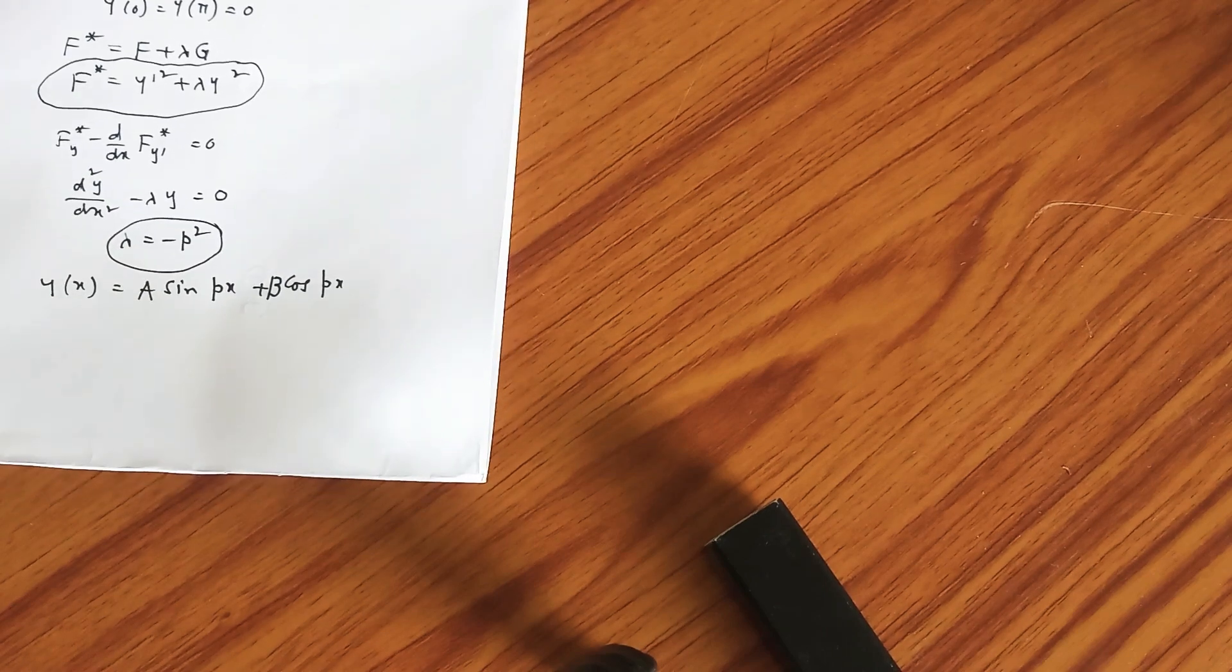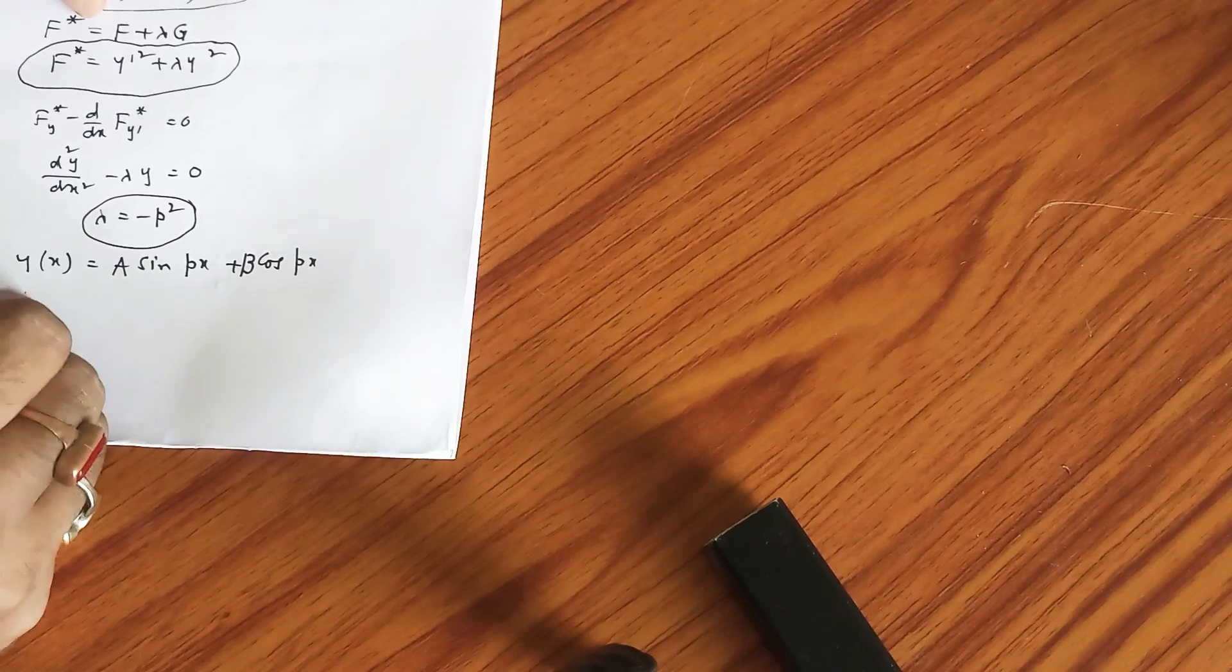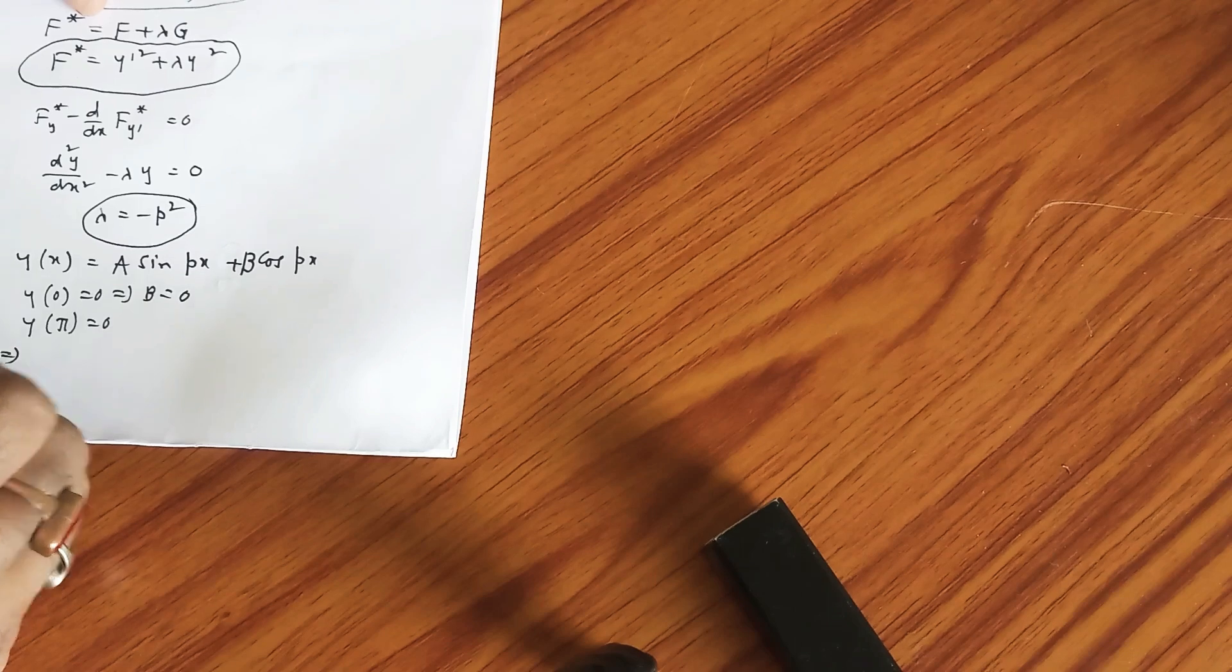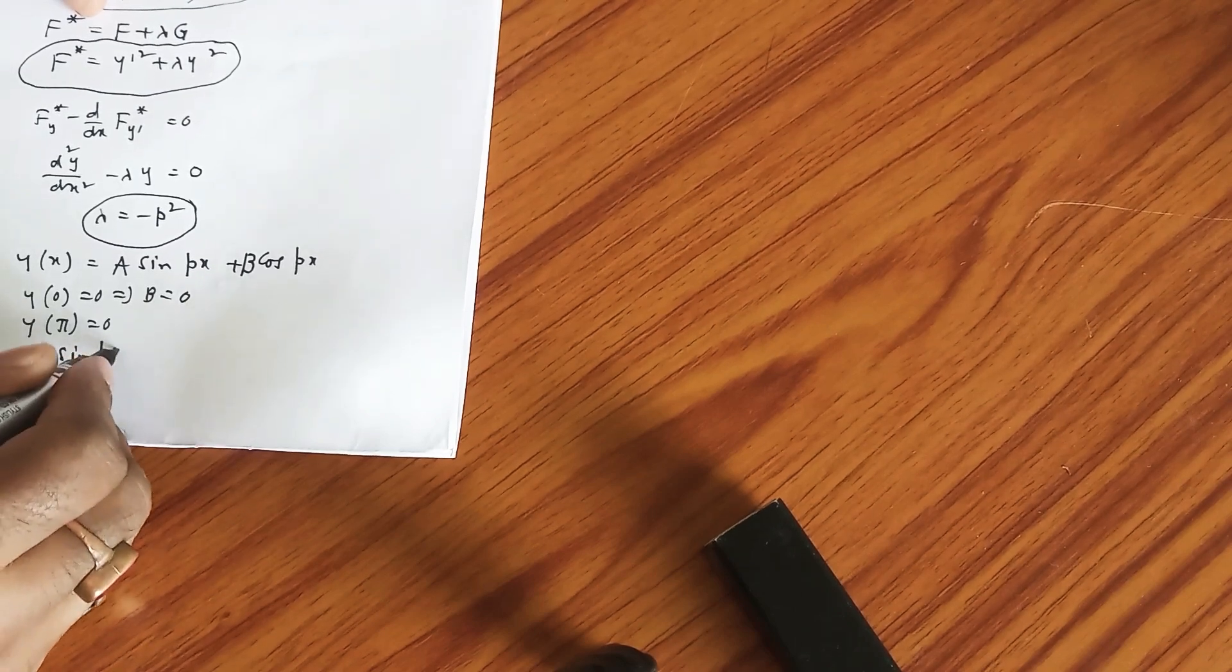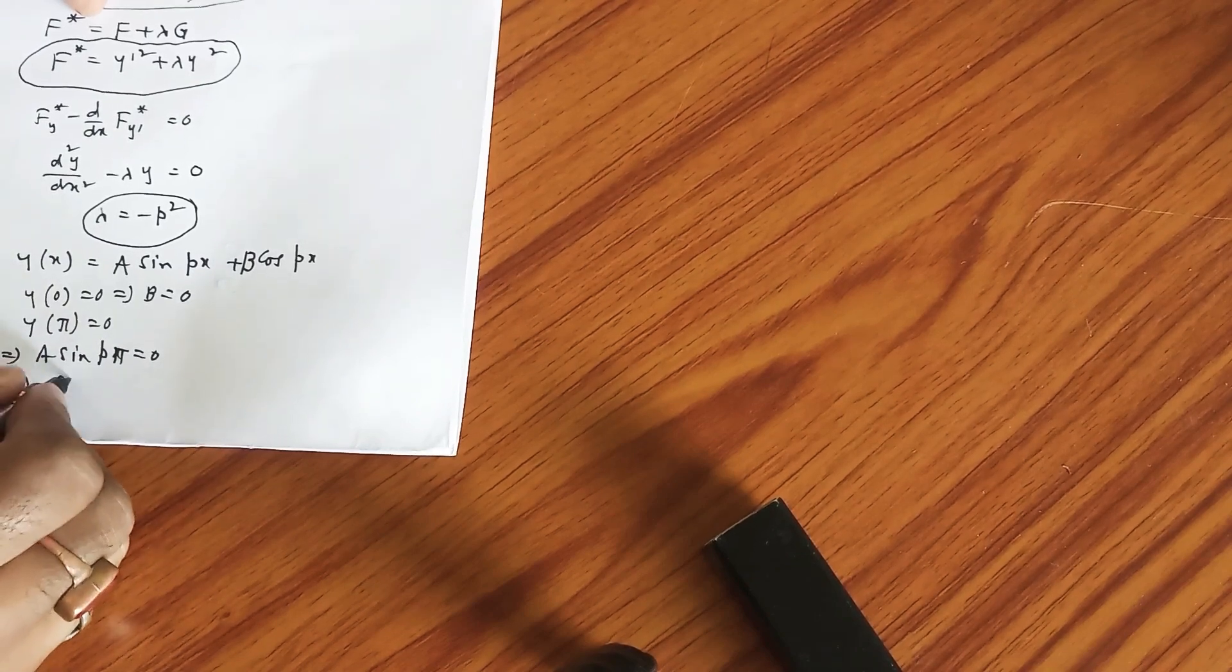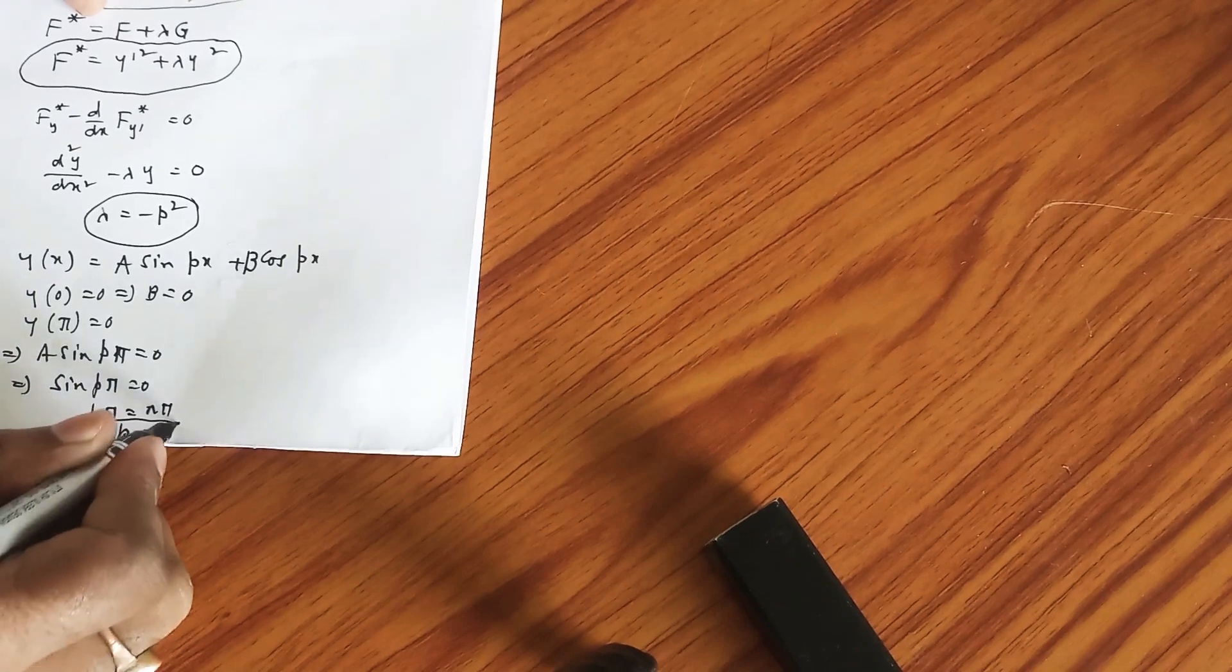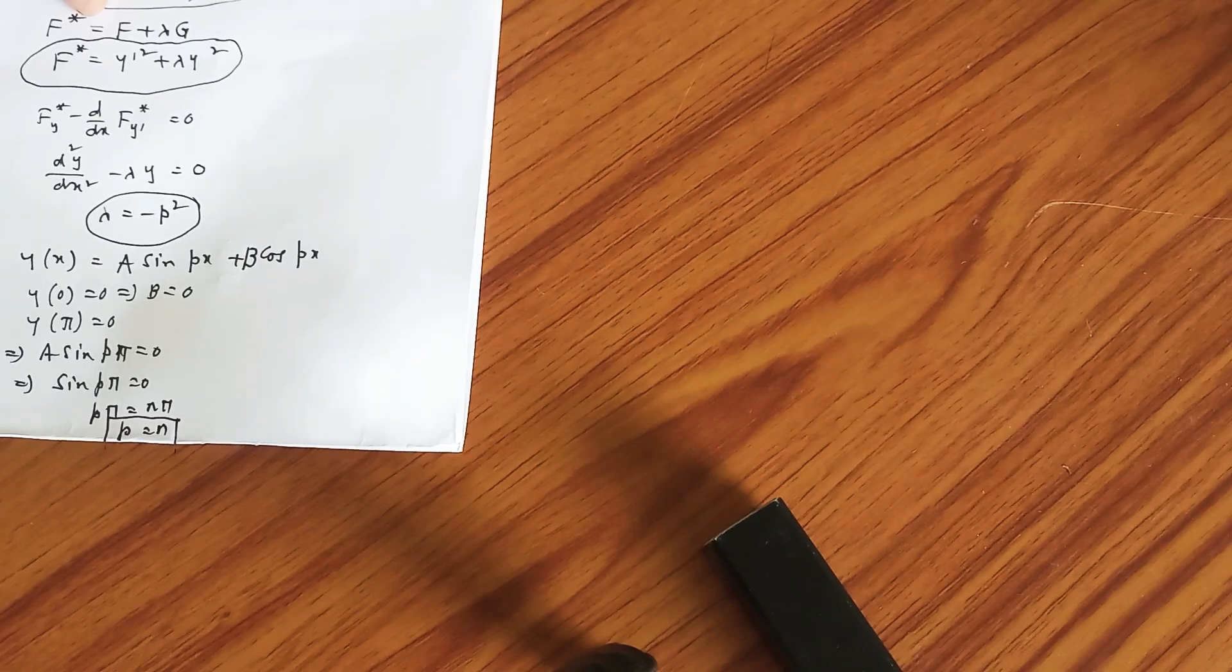Use these two boundary conditions. y(0) = 0 will give you b = 0. y(π) = 0 - to get the non-trivial solution you must have sin(pπ) = 0, which gives pπ = nπ, that is p = n where n = 0, 1, 2, 3, 4 and so on, obviously in the negative side as well.